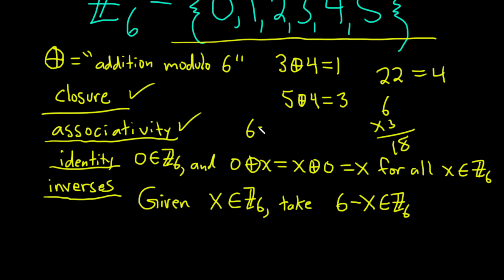You could think of, you know, 6 is the same thing as 0. So it's basically saying 0 minus x. And then that's just saying minus x, which is in z6, right? So negative 4 would be the same thing as 4. So here, this is in z6.